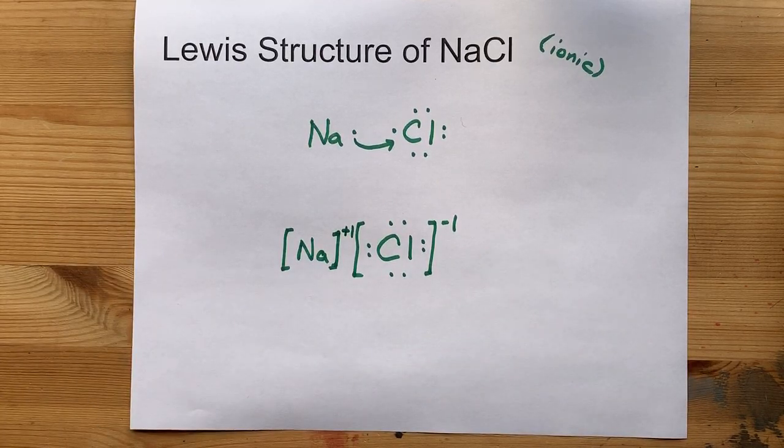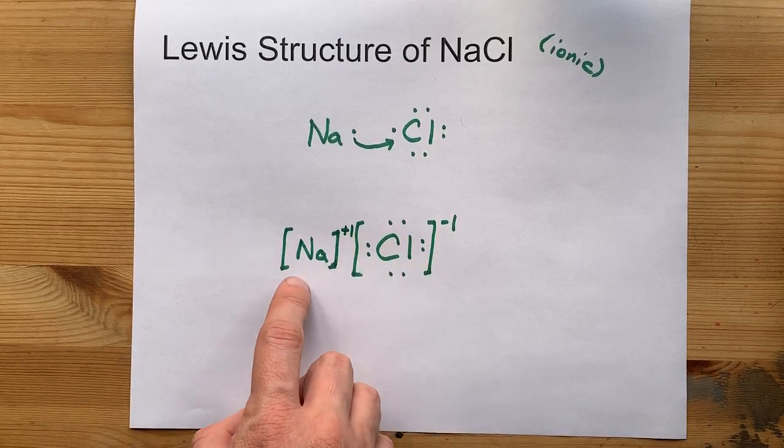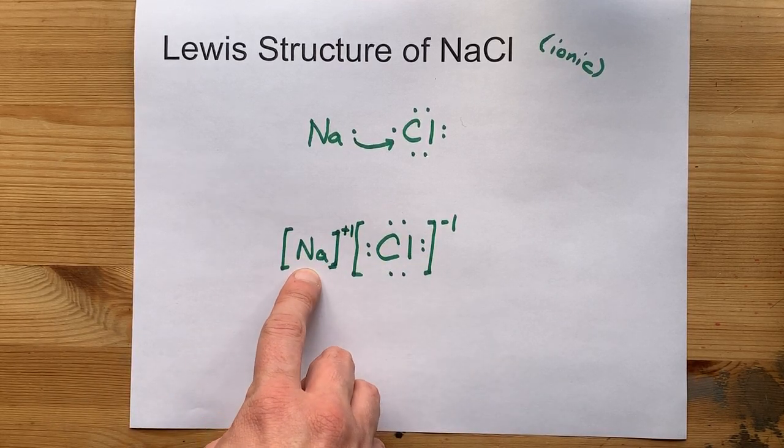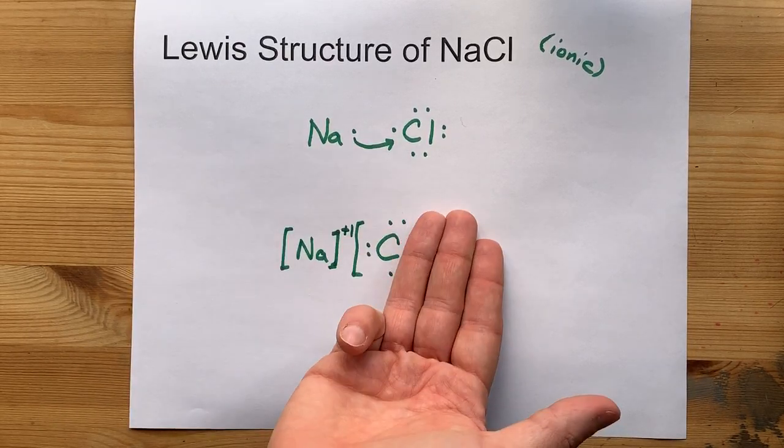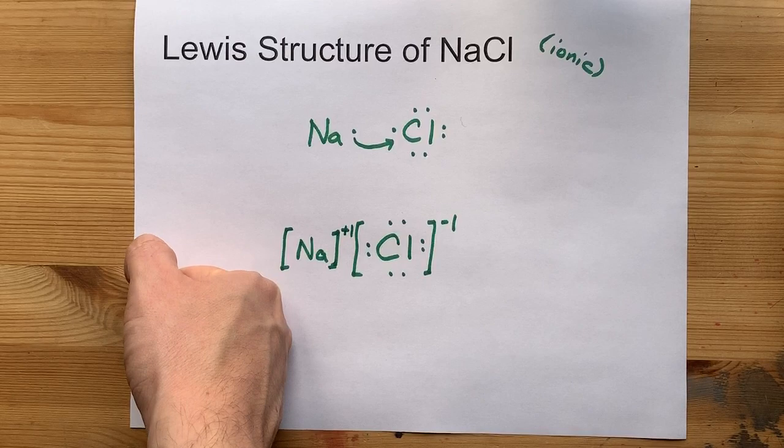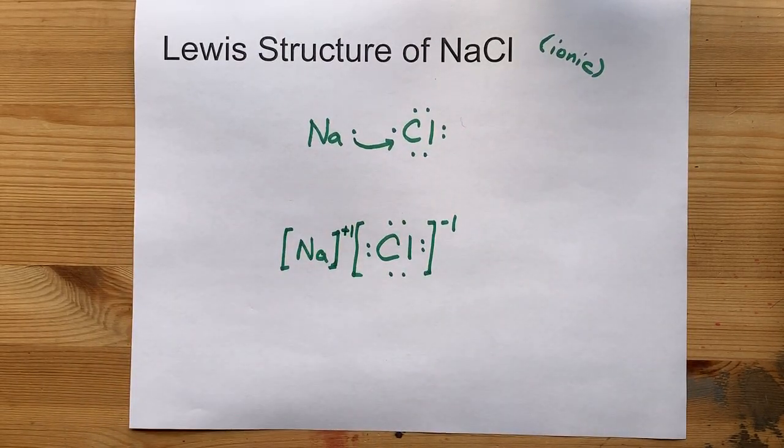Cool. This is the complete Lewis structure for NaCl. What matters is that sodium does not have its outermost electron, and chlorine has it, because it gave it away. That's how you show your teacher you understand ionic bonding. You're welcome. Best of luck.